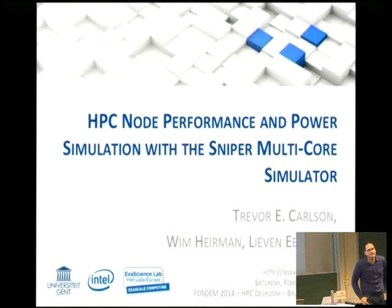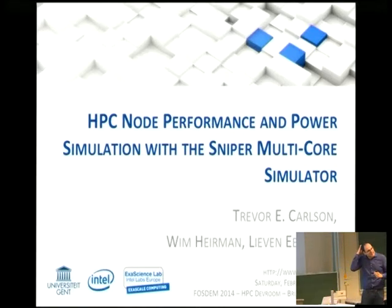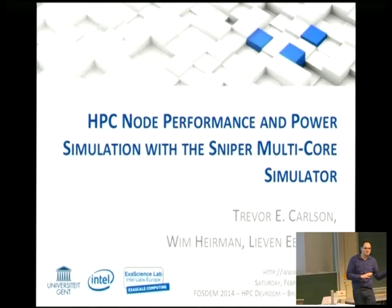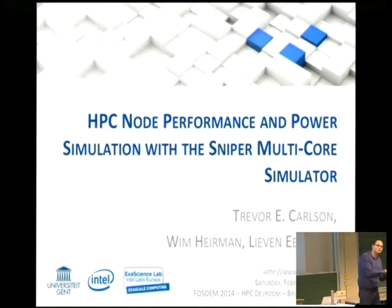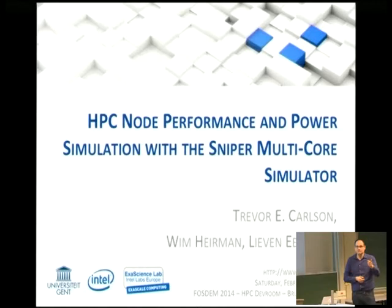Audience question: How do you correlate this information with specific functions or source-code lines? Is that possible? The roofline model shown earlier is function-based. What we're looking into next is how to go even deeper, possibly into the source. This goes back to the question from the previous talk about whether we want one platform to do everything. We already have tools that do analysis per code line. The concern is that going to that level might slow down the simulator too much, losing the benefits of being a fast, parallel, higher-level simulator.